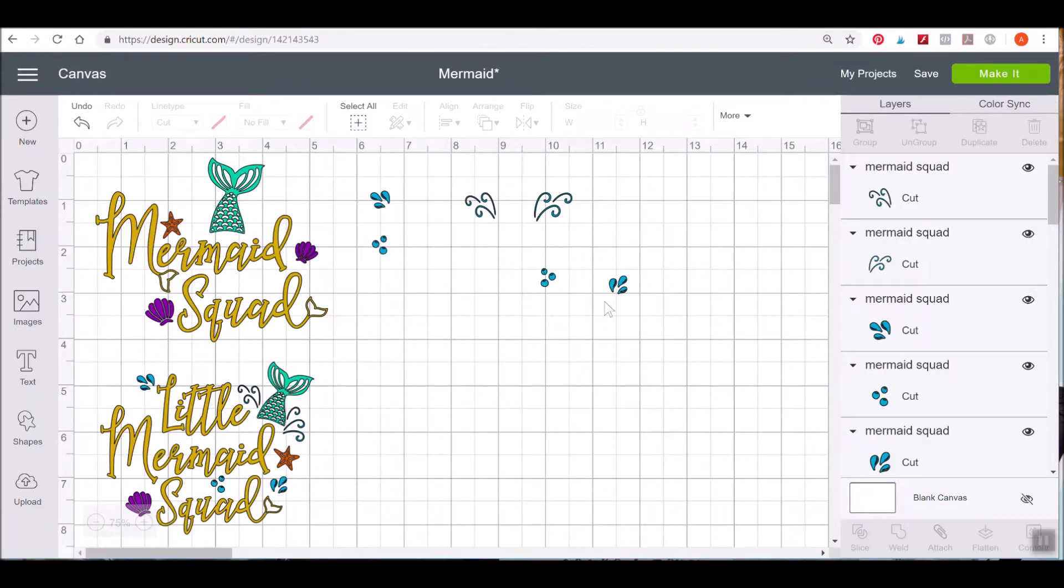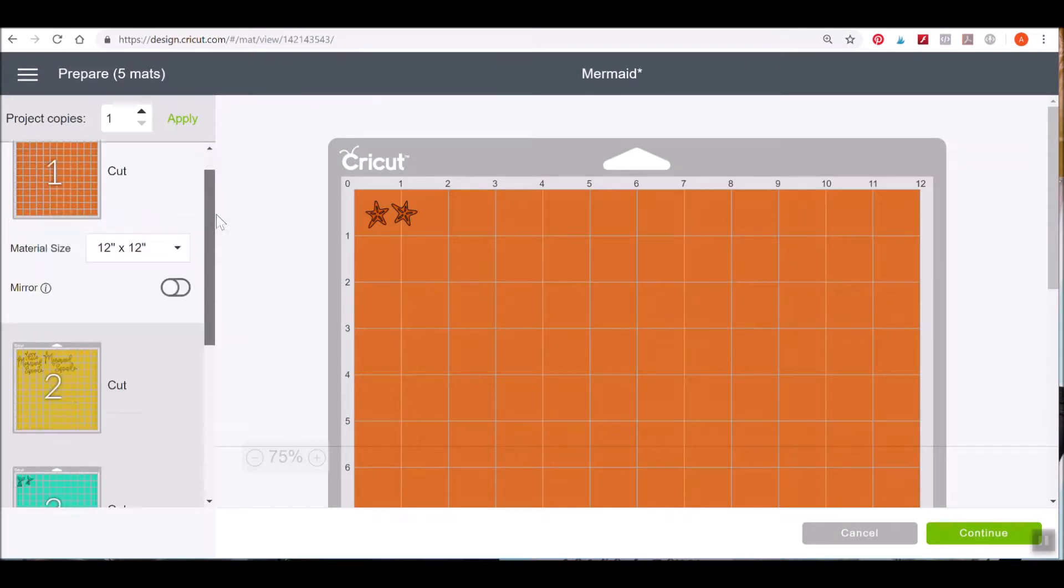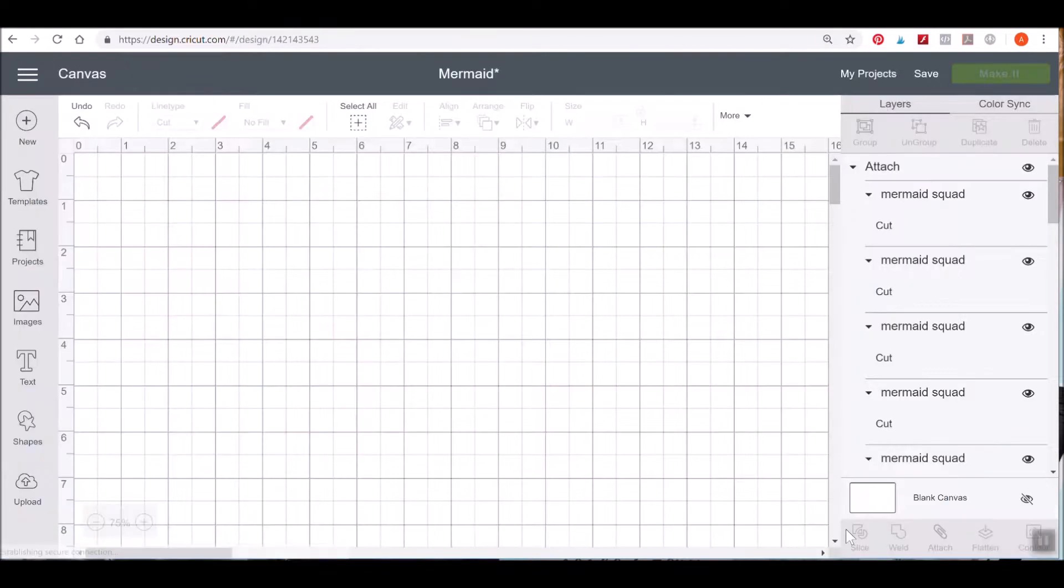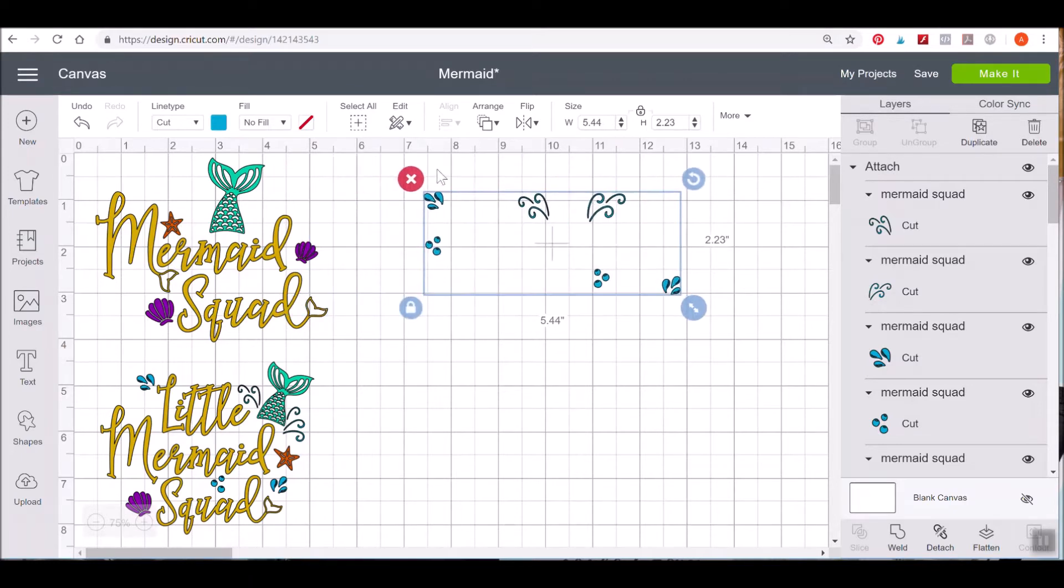If we cancel that and we go back here and we've highlighted them and we use our attach tool and then we go to the cut screen, you see now that they're placed just as they would be placed when we go to put them on our water bottle or tumbler or whatever your canvas of choice is.